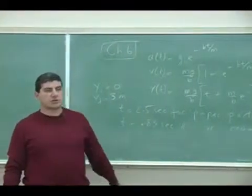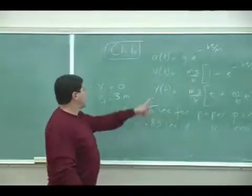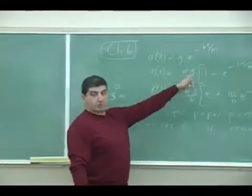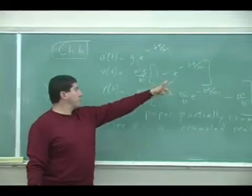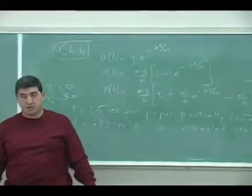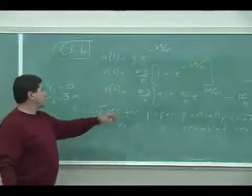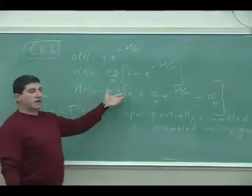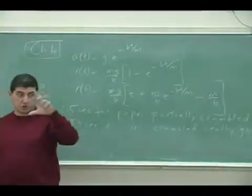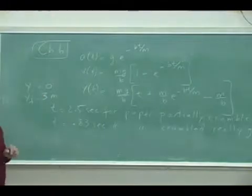...the acceleration drops exponentially and then the velocity increases exponentially up to some maximum value known as the terminal velocity and then the y of t is how the distance traveled by the object changes as a function of time.